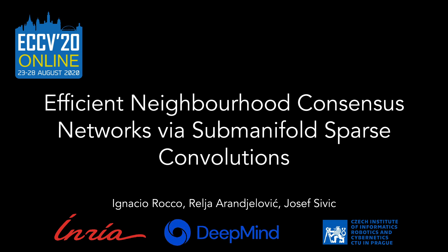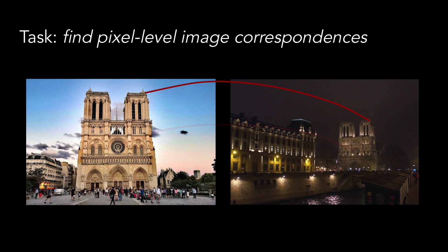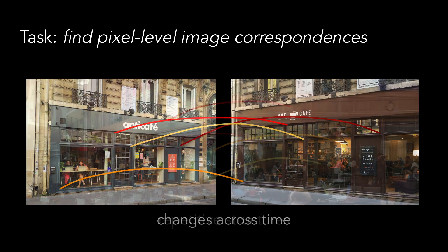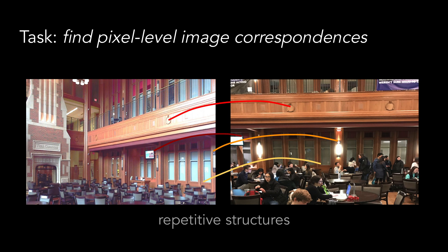Efficient neighborhood consensus networks via sparse manifold convolutions. In this work, we seek to find pixel-level correspondences between pairs of images in challenging scenarios such as day-night matching, scenes with changes across time,